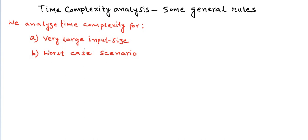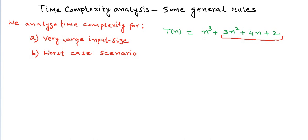What can be a worst case scenario apart from very large input size is something we will discuss later in some examples. If we have a function defining the running time of an algorithm like T(n) = n³ + 3n² + 4n + 2, then for very large input sizes, the lower order terms like 3n² + 4n + 2 will become insignificant in comparison to the n³ term. So this will be almost equal to n³ for very large values of n, or when n tends to infinity. That's why we say this function will not grow any faster than a function c·n³, and we say this function is Big O of n³.